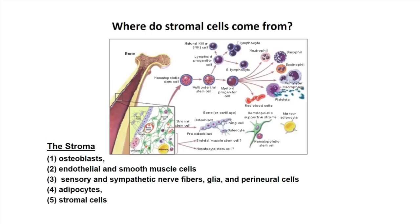The bone marrow has two stem cell sources: the hematopoietic stem cell and what's typically called the mesenchymal stem cell, although people have kind of moved away from that term. I'll go through the chaotic nomenclature of stromal cells in my next slide.